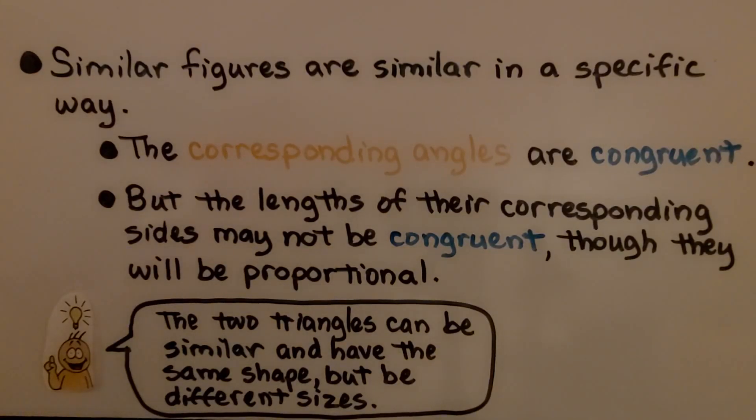Similar figures are similar in a specific way. The corresponding angles are congruent, but the lengths of their corresponding sides may not be congruent, though they will be proportional.